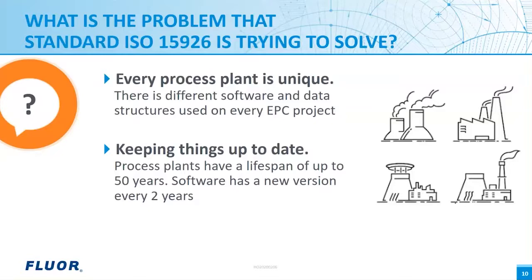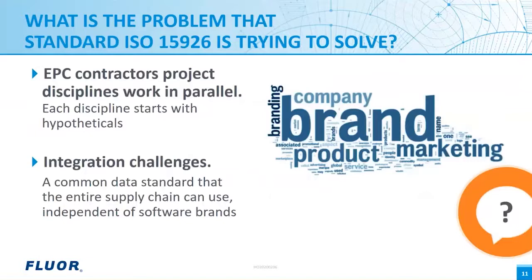Process plants have a lifespan of up to 50 years; software has a new version every two years. The owner-operator would like to renew the software used for operations and maintenance, or for handover with the EPC contractor. EPC contractor project disciplines work in parallel, so each discipline starts with hypotheticals. Data is engineered and once it has a certain status — for example, release for design — it is handed over to other disciplines, which had to start engineering already or worse, had to order long-delivery items.